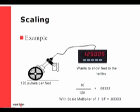Our example shows this application requiring feet to the tenths to be displayed. We see that our sensor gives off 120 pulses per foot. So our equation becomes 10 over 120, or 0.08333. When we add a scale multiplier of 0.1 in the programming, our scale factor then becomes 0.83333.